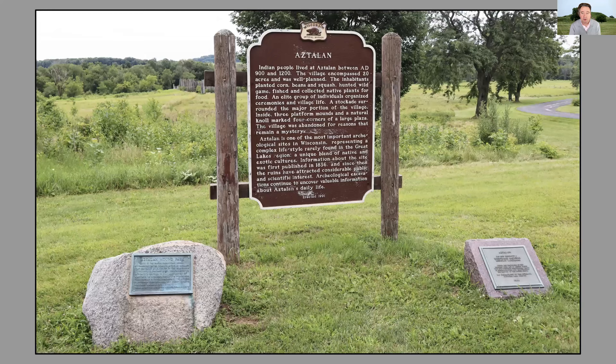Now we go north to Aztalan in Wisconsin — a city laid out basically like a miniature Cahokia. The mounds aren't quite as tall, the walls not quite as large, but the city is recognizable as Cahokia. When people first started looking at this, there were remains of agricultural fields on the outside of Aztalan, and it's also right next to a river. So basically you can take Cahokia outside St. Louis and a miniature version of it is sitting here in Aztalan.